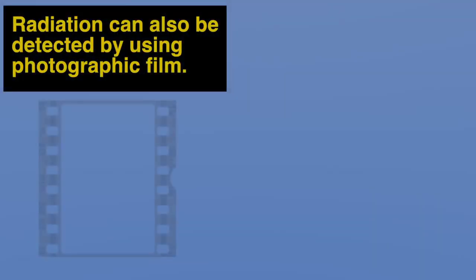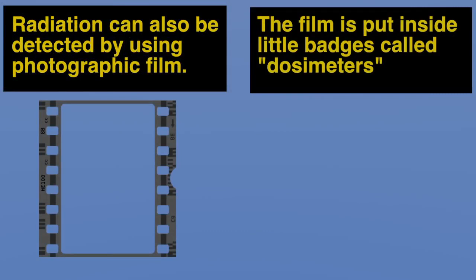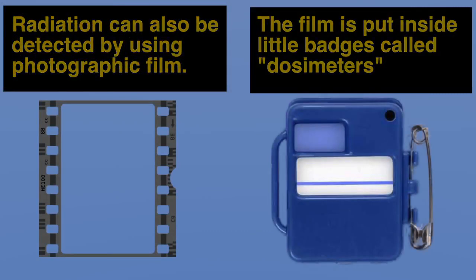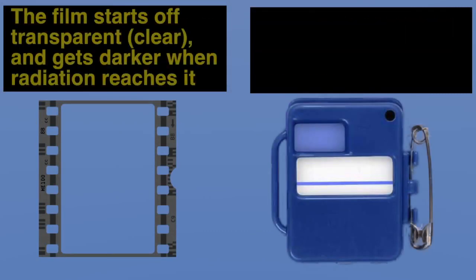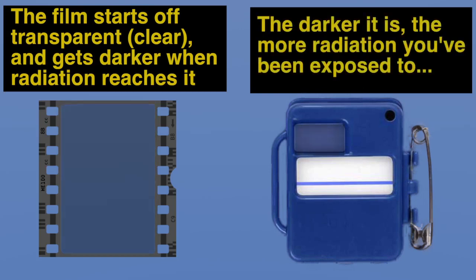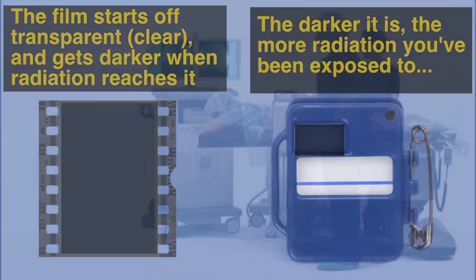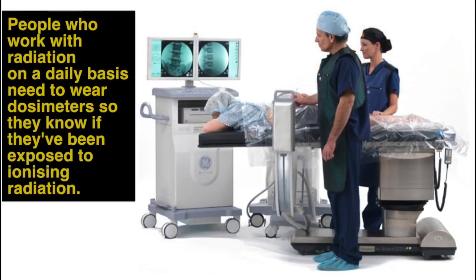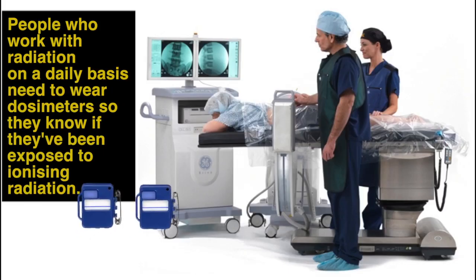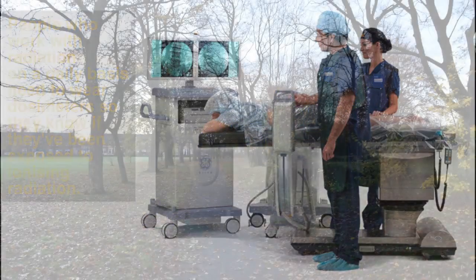Radiation can also be detected using photographic film. The film is put inside little badges called dosimeters. The film starts off transparent and gets darker when radiation reaches it. The darker it is, the more radiation you've been exposed to. People who work with radiation on a daily basis need to wear dosimeters so they know if they've been exposed to ionising radiation.